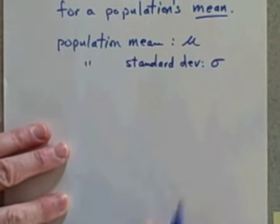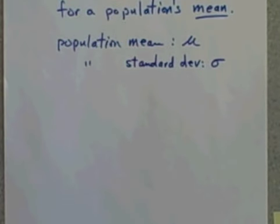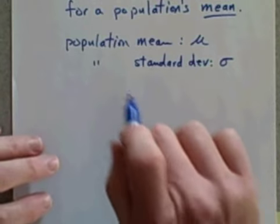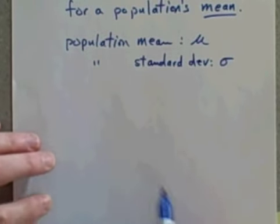And the population standard deviation is represented by the Greek letter σ (lowercase sigma).